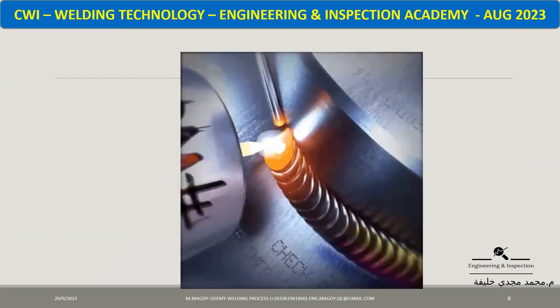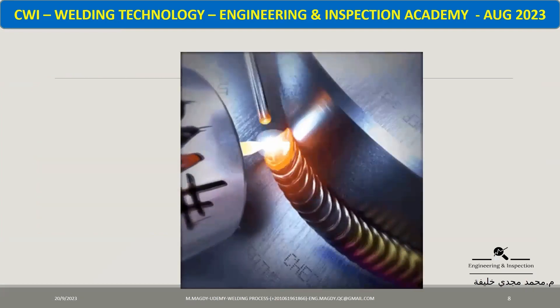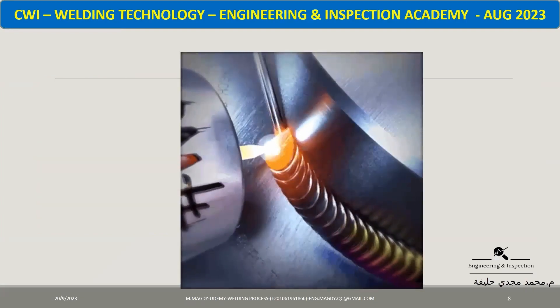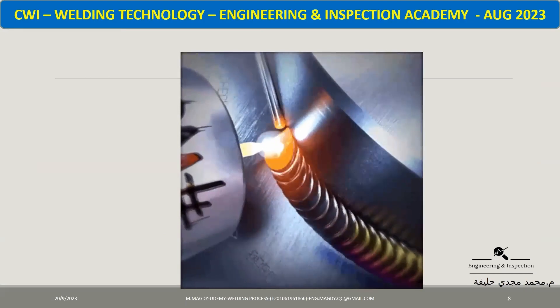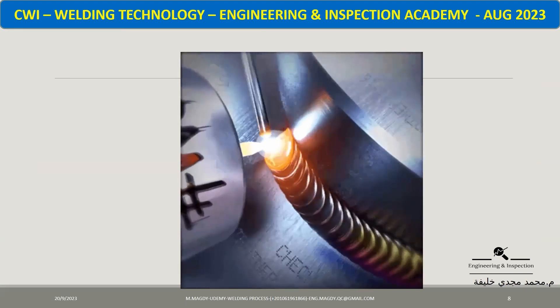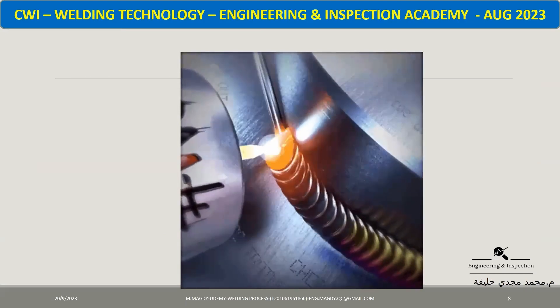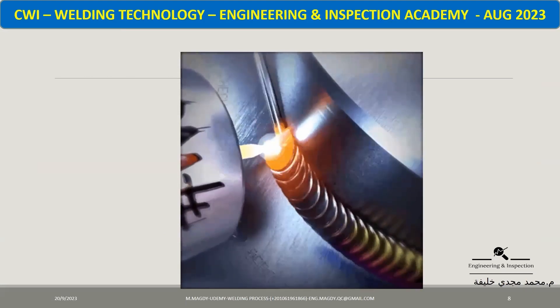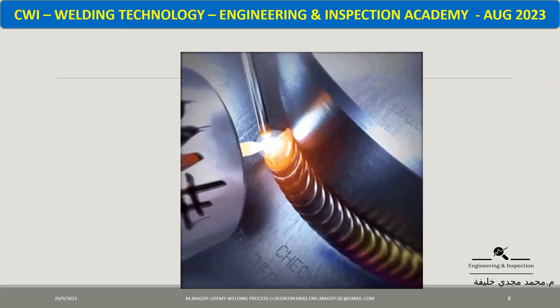This is shielded metal arc welding, and this is gas tungsten arc welding — a very clean process which you can use in aerospace and in food and medicine processing industries.